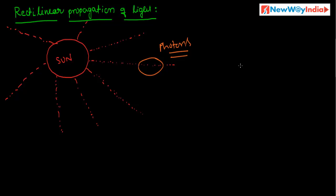Each photon has an electric field and a magnetic field surrounding it. Consider a photon — it consists of an electric field, denoted by E, and a magnetic field, denoted by B. These two fields are around the photon.